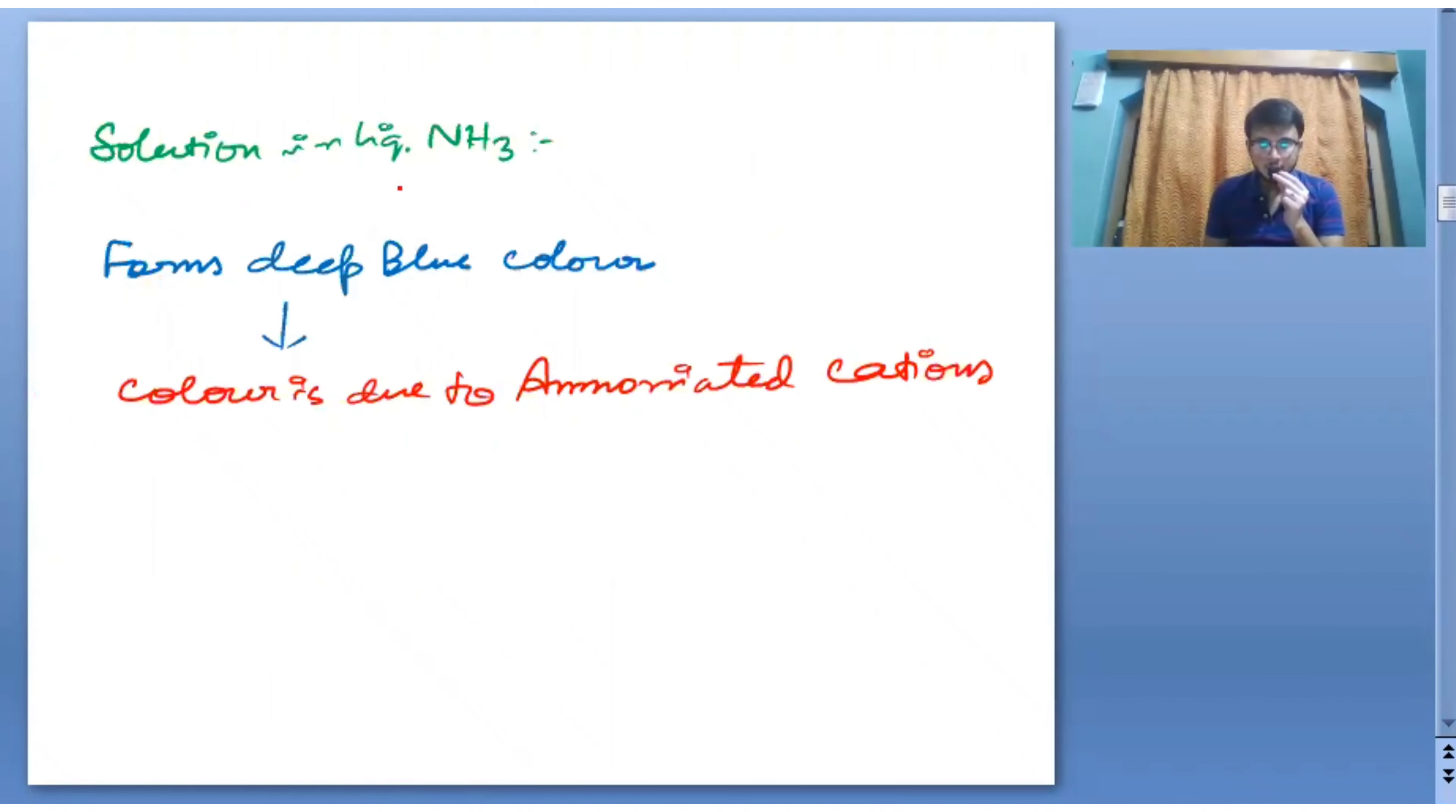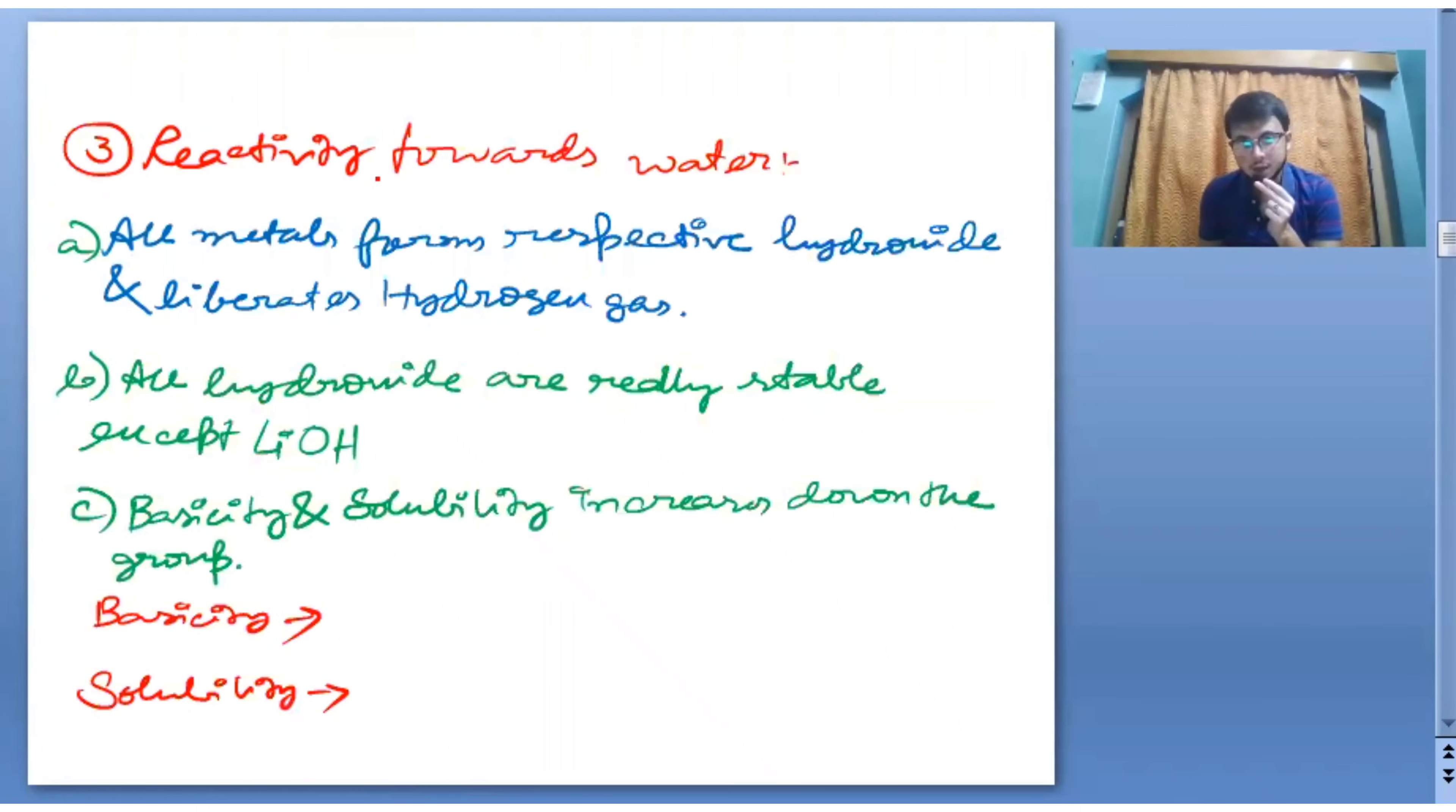Now, solution in liquid NH3. Every alkali metal is soluble in liquid NH3 and it gives us a deep blue color. Why is deep blue color formed? The color is due to ammoniated cations. This is a very often asked question.